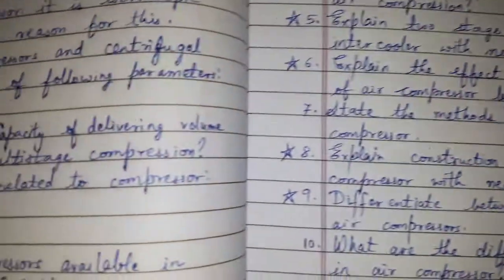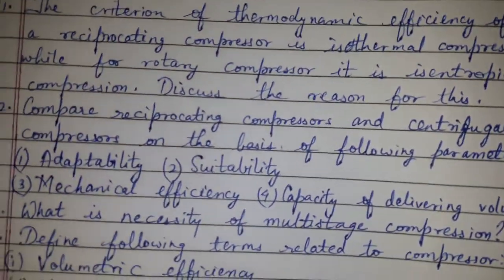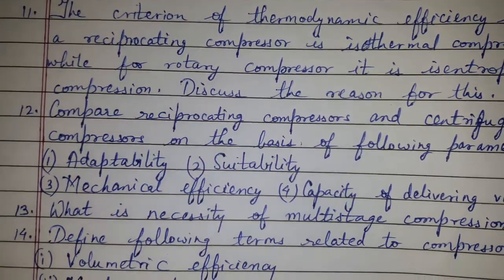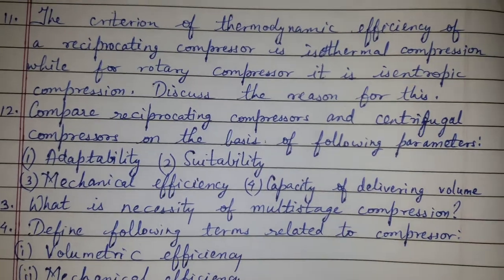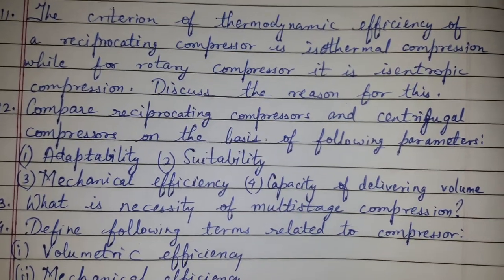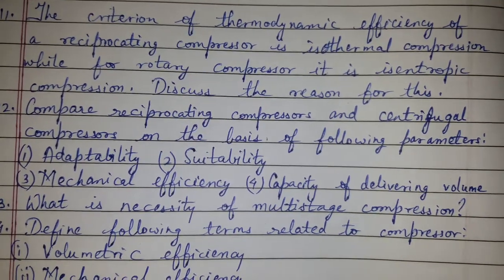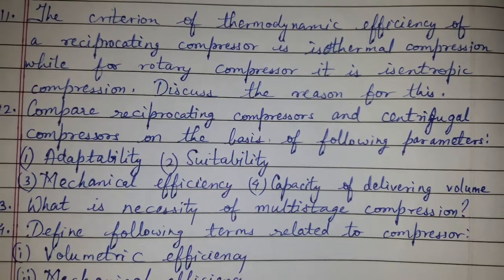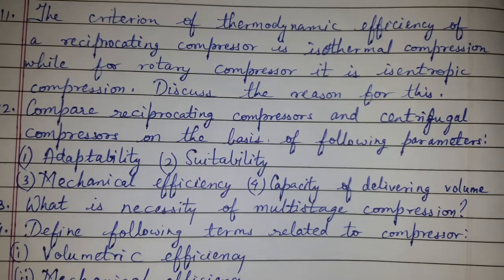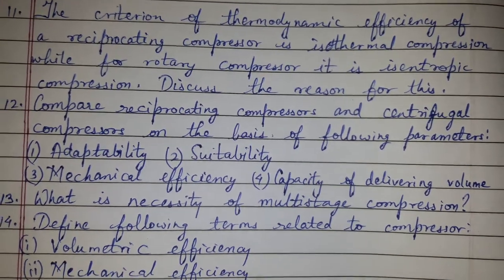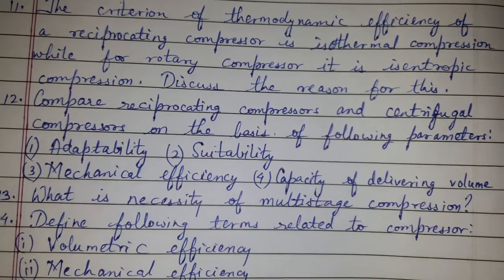Question 11: The criterion of thermodynamic efficiency of a reciprocating compressor is isothermal compression, while for a rotary compressor it is isentropic compression. Discuss the reason for this.